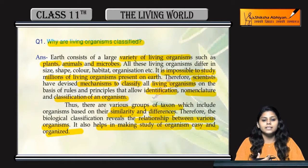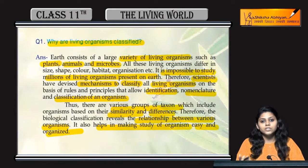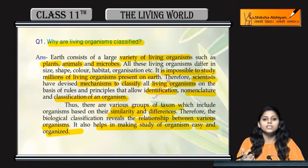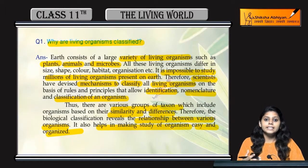Classification में क्या आता है — species, genus, family, order, kingdom, phylum — ये सारे taxons हैं, इनके under हम organisms को classify करते हैं।